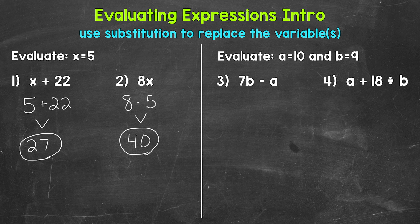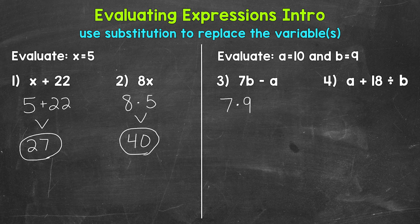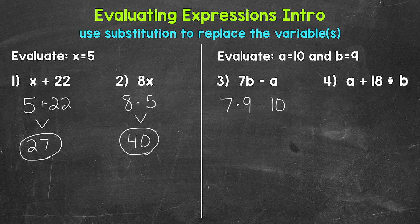Let's move on to numbers 3 and 4, where we have two variables and multiple operations. We'll start with number 3: 7b minus a, or 7 times b minus a. Let's plug in the given values for a and b and rewrite this expression with those substitutions. 7 times b—well, b equals 9, so plug in 9—minus a. a equals 10, so plug in 10.